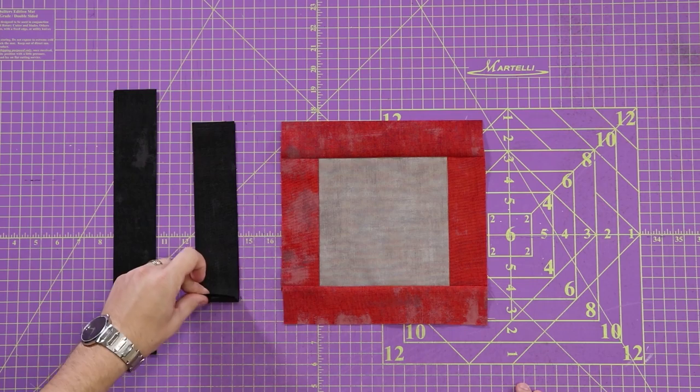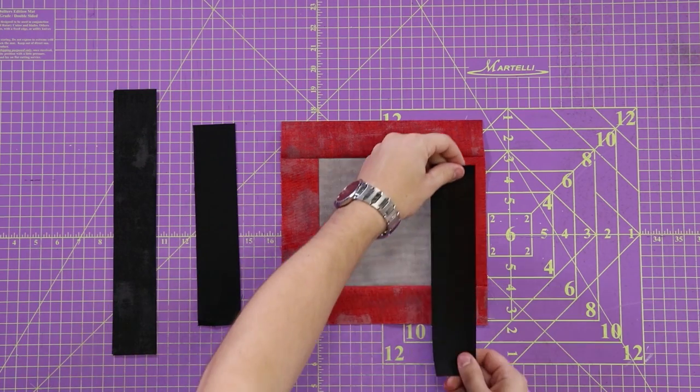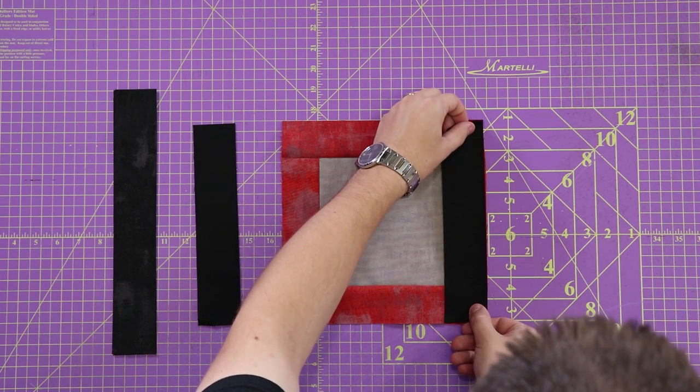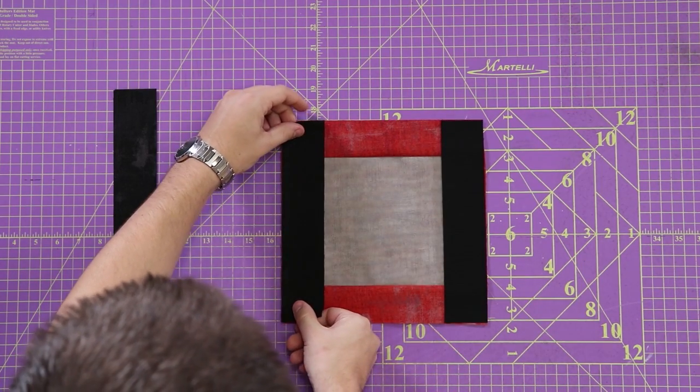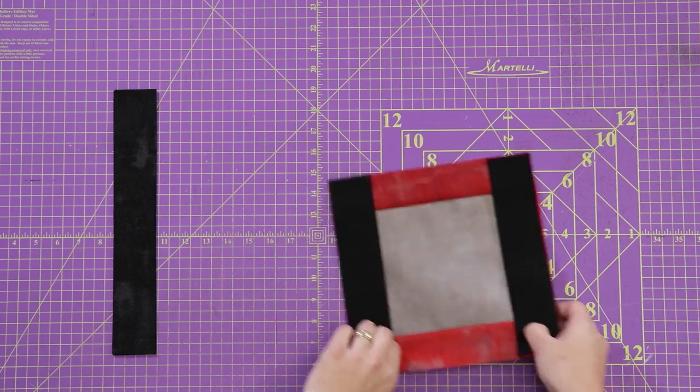Now it's time to move on to the black here. Just following the same process, I'm going to start with my shorter piece and I'm going to do the sides. So side here, side here, taking it over to the sewing machine.